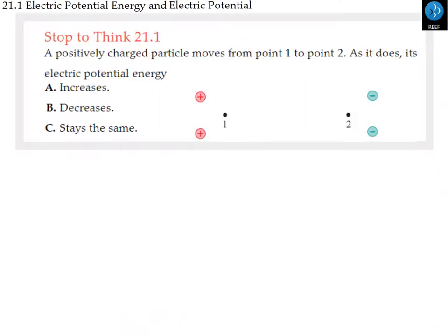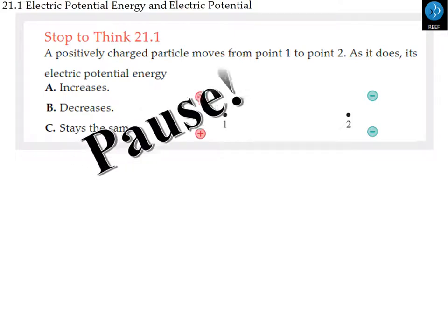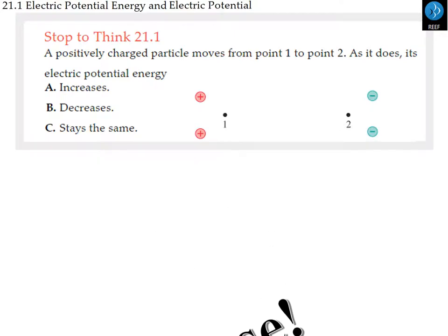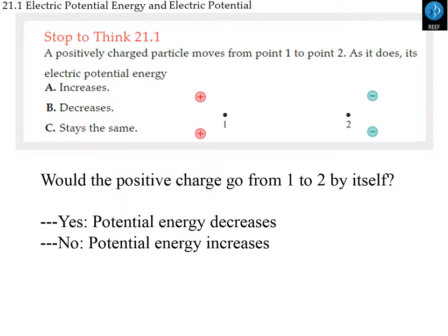Final question: a positively charged particle moves from point 1 to point 2 in the vicinity of positive and negative source charges. What happens to its potential energy? The answer is it decreases. The particle moves toward negative charges on its own, so it moves spontaneously in that direction. Remember: if a charge moves by itself, its potential energy decreases.